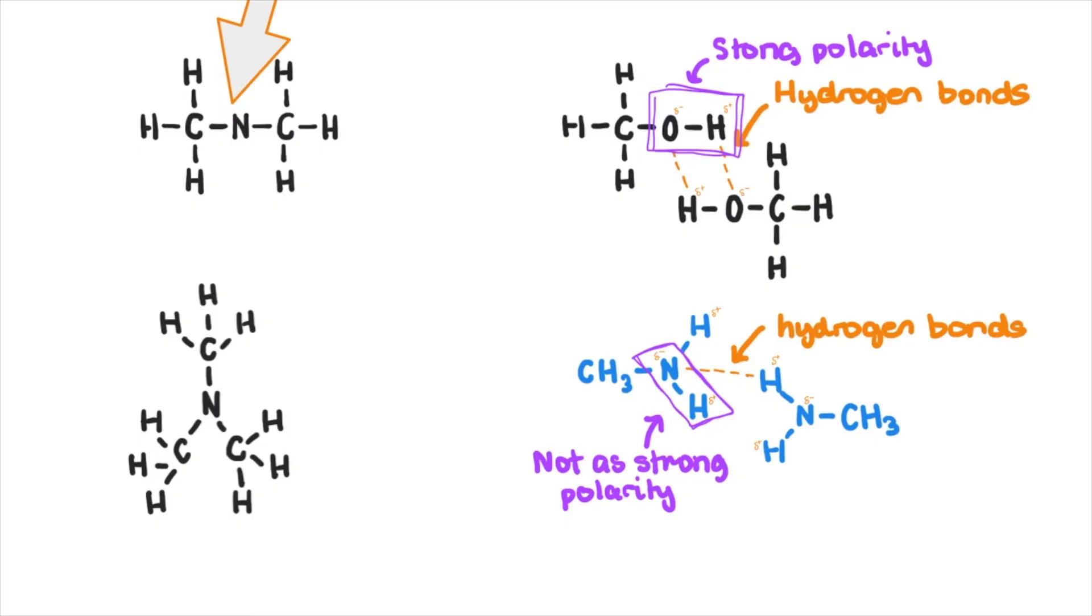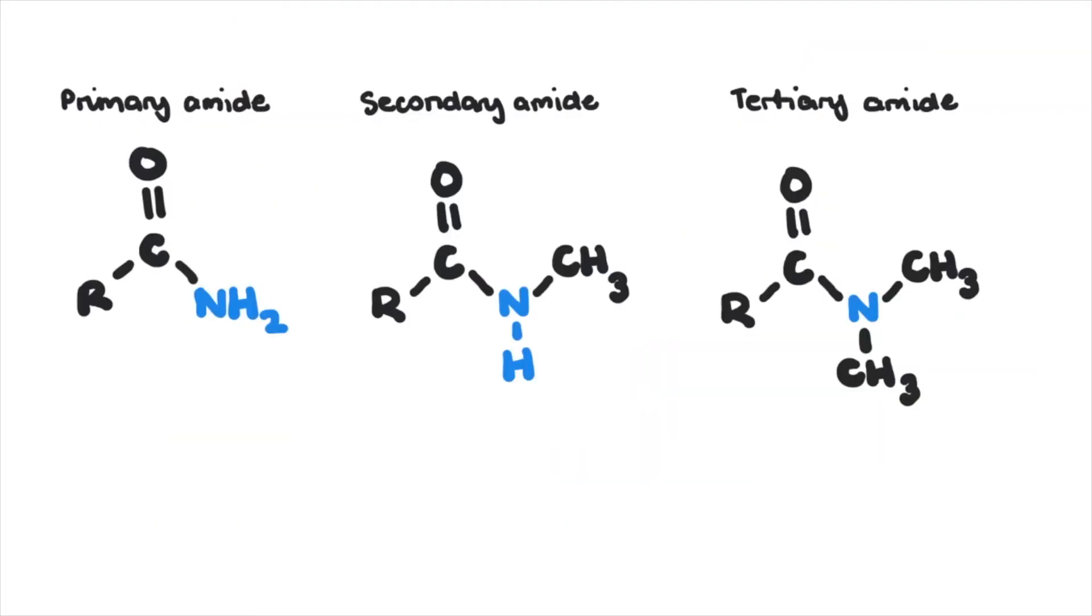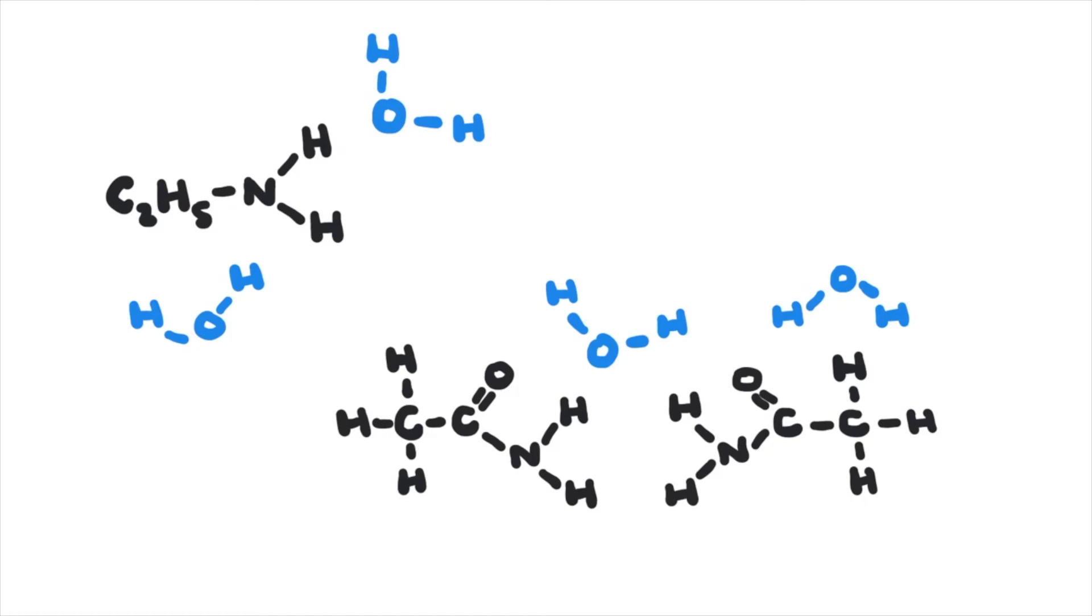How about amides? Amides follow a similar trend as amines as their ability to form hydrogen bonds decrease from primary to tertiary amides for the exact same reason. Small chain amines and amides are both soluble as they can form hydrogen bonds with water molecules depending on the ease of accessibility. The carbonyl group in the amides can also form dipole-dipole forces with water.